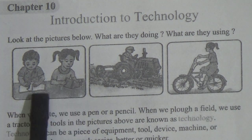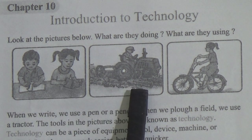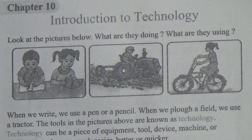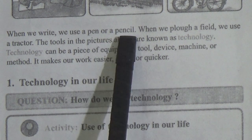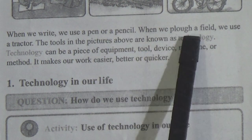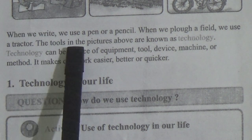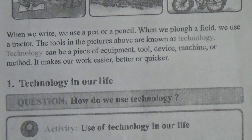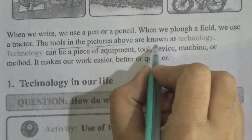We can see they are writing and she is reading. And here is a tractor — he is riding a tractor. And here is a cycle — she is riding a cycle. When we write, we use a pen or pencil. When we plough a field, we use a tractor. The tools in the picture above are known as technology. Students, you can underline this line: the tools in the picture above are known as technology.